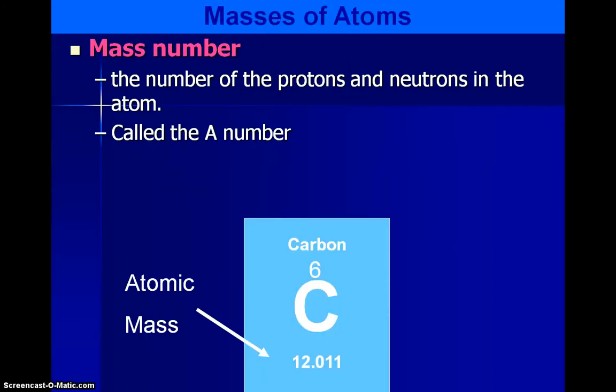Now, the other number on the periodic table is actually the atomic mass. So you see the words mass number and atomic mass here. They're actually a little different. Atomic mass, you can tell on the periodic table, it is not a whole number. And I'll talk about why it's not a whole number.